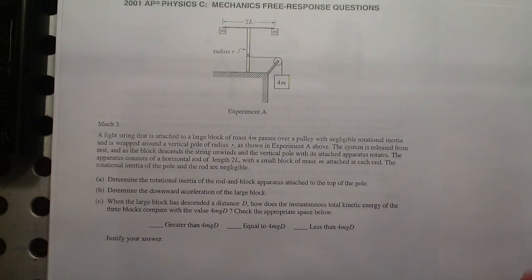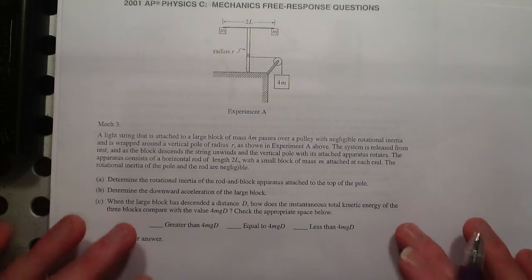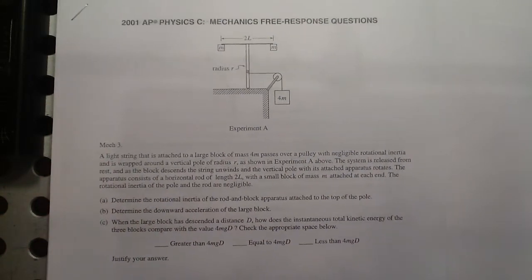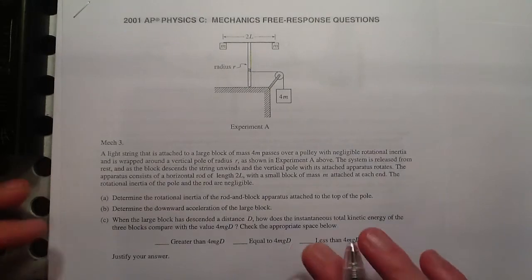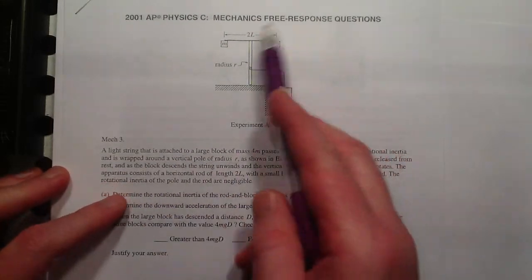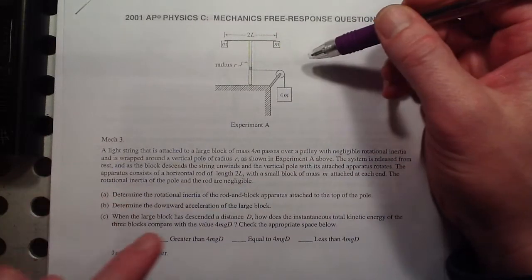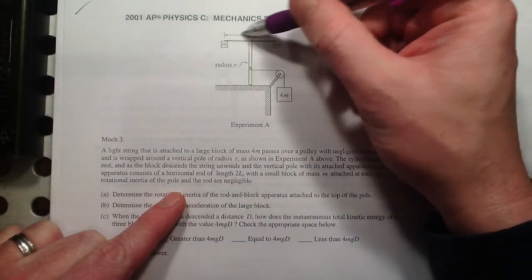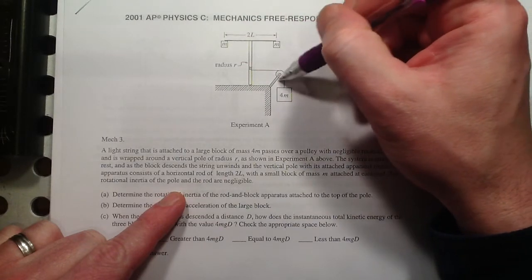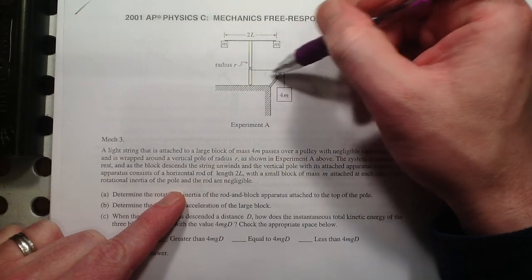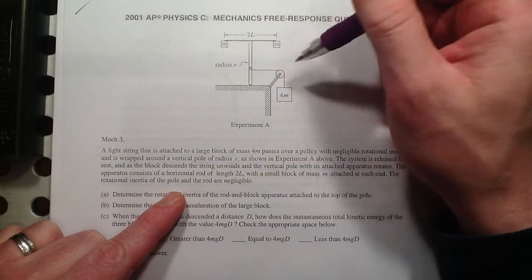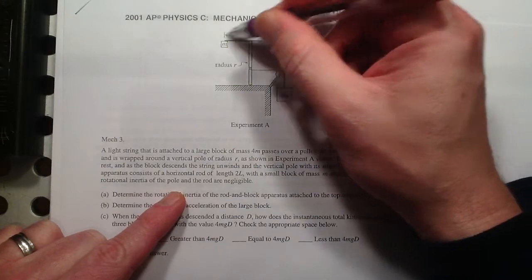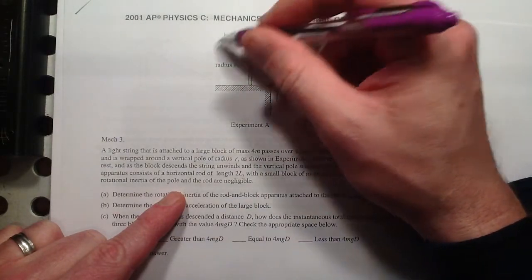This physics video contains the solutions for free response questions. The first one has this apparatus. The rod is of negligible mass, and the pulley does not have any rotational inertia. So the only real objects we're considering are this block that's falling and these two blocks that are spinning.